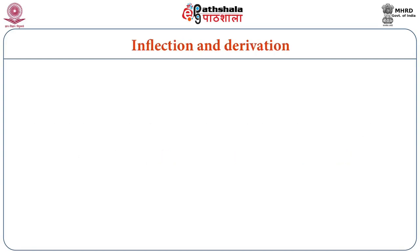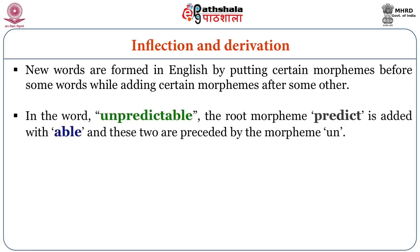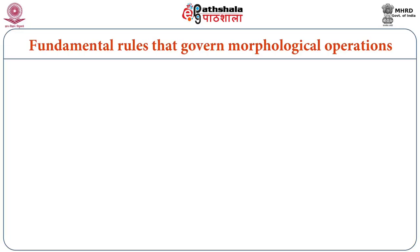Let us also discuss quickly what inflectional and derivational morphology are. New words are formed in English by putting certain morphemes before or after some words. In the word 'unpredictable,' the root morpheme 'predict' is added with '-able' to form 'predictable,' and those two are preceded by the morpheme 'un.' So the root word is 'predict,' 'un' is the prefix, and '-able' is the suffix — giving us 'unpredictable.'